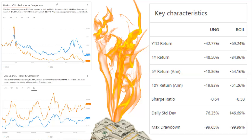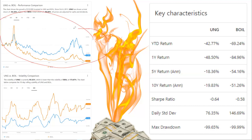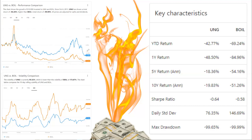If you take a look here at the UNG versus BOIL performance comparison — let's say you invested $10,000 in UNG and BOIL since October 6th of 2011. BOIL's total return would be negative 99.9%, and UNG would be a return of negative 94.28%. Now in just the past five years alone, this five-year chart with UNG in blue and BOIL in orange shows that BOIL would have returned negative 98.5%, and UNG would have returned negative 63.96%.